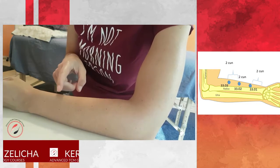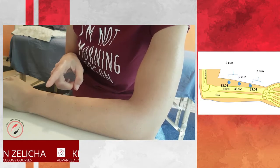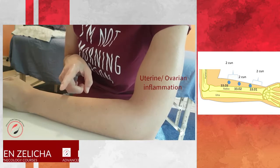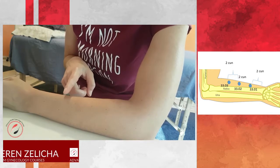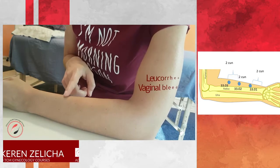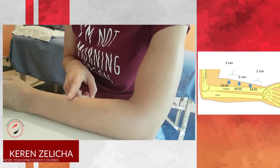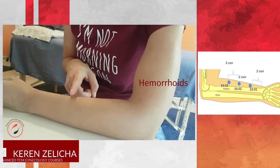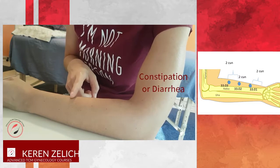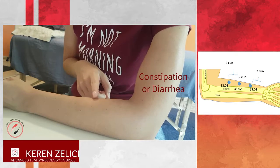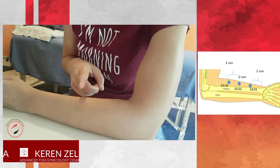The indications for these points are any women's disorders: uterine inflammation, ovarian inflammation, menstrual irregularities, leucorrhea, vaginal bleeding. Also for hemorrhoids—this is one of the main indications for the points—constipation, diarrhea, myomas, and uterine cervical cancer.